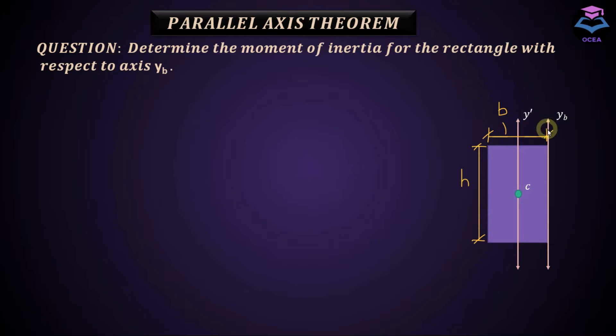Okay, so in this question, we are asked to determine moment of inertia about this axis, which is parallel to centroidal axis, y dash axis. So according to parallel axis theorem, I yb is equal to I y dash plus adx square.